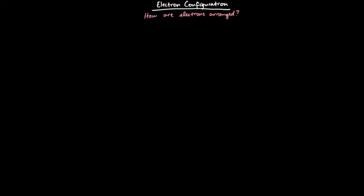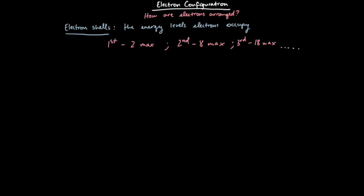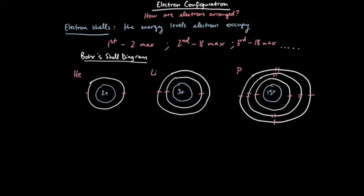The first energy level holds 2 electrons max, the second holds 8, third holds 18 max, so on and so forth. It's a mathematical formula. Most of us only need to know up to the third. And so here we have Bohr's shell diagram.